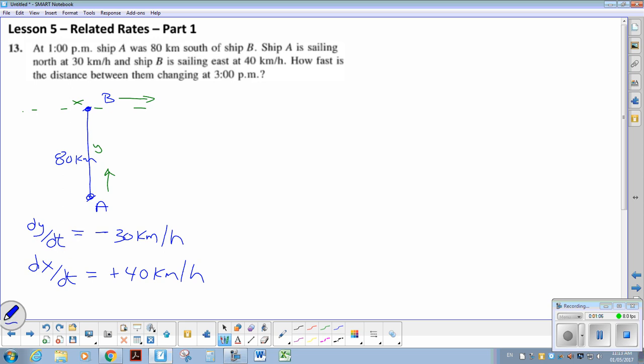How fast is the distance between them? So we are looking for H or dH by dt. That's what we are looking for. And we want to know at 3 o'clock, so two hours have passed. So two hours has gone by, which means that the sides of this triangle...